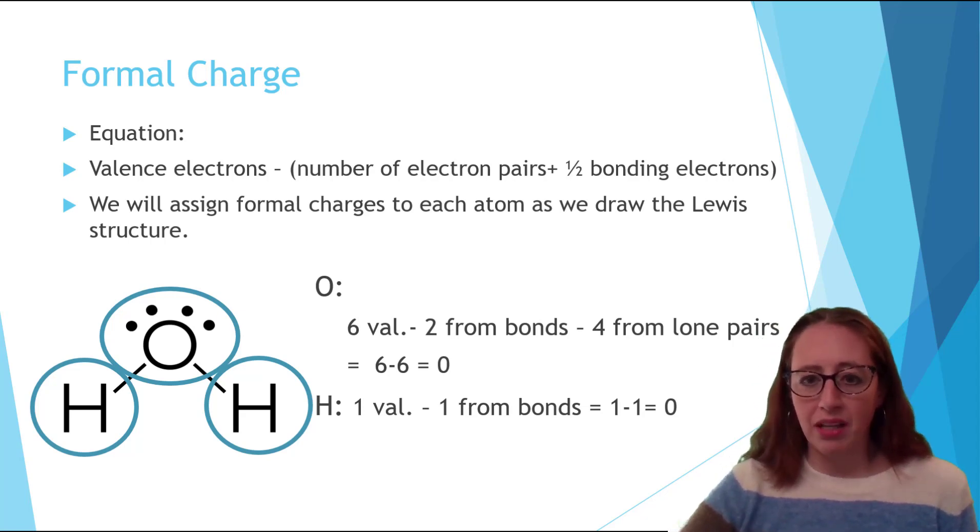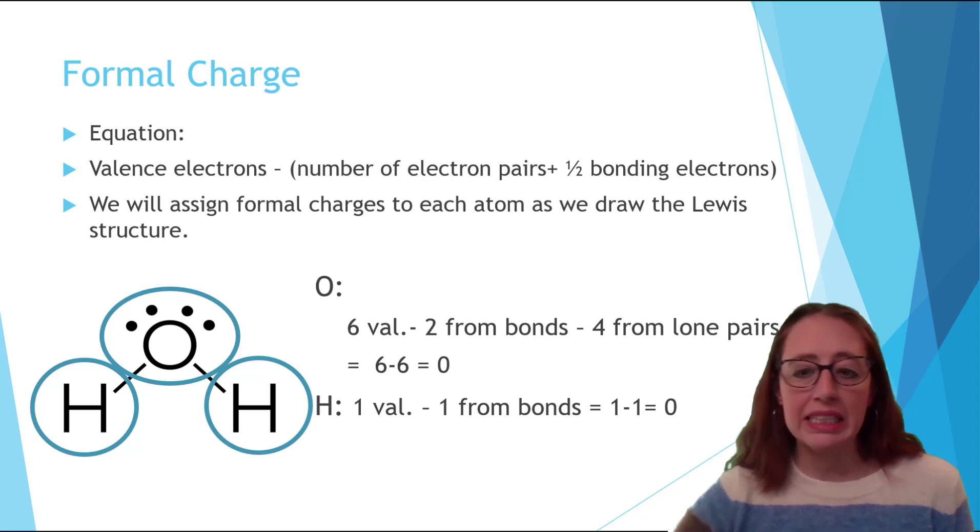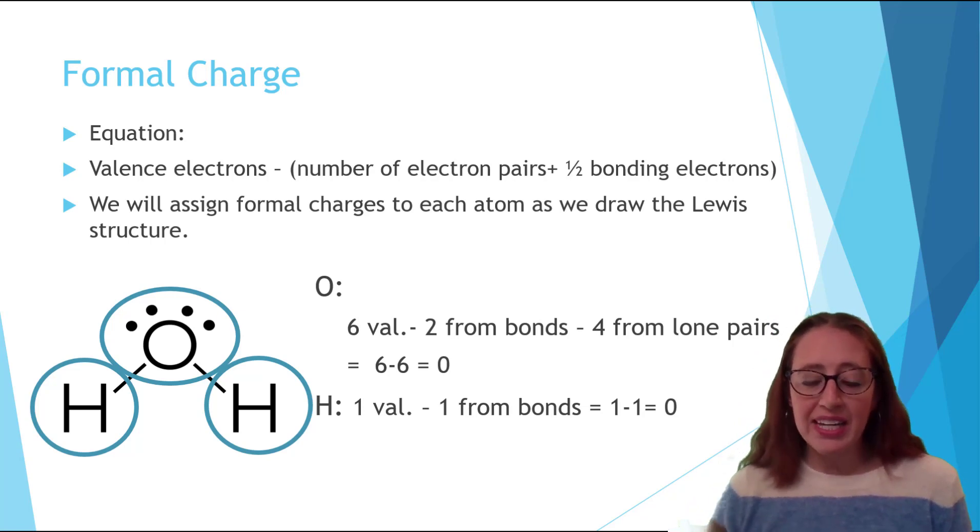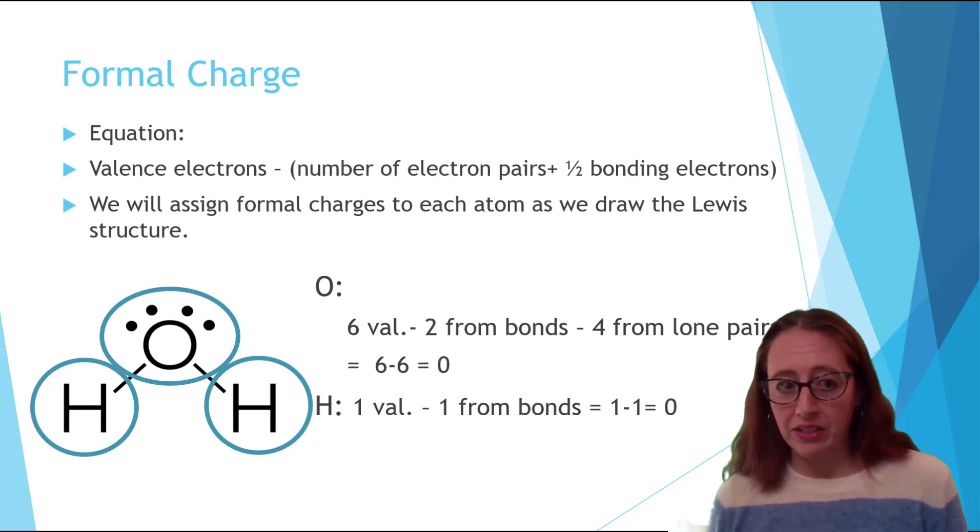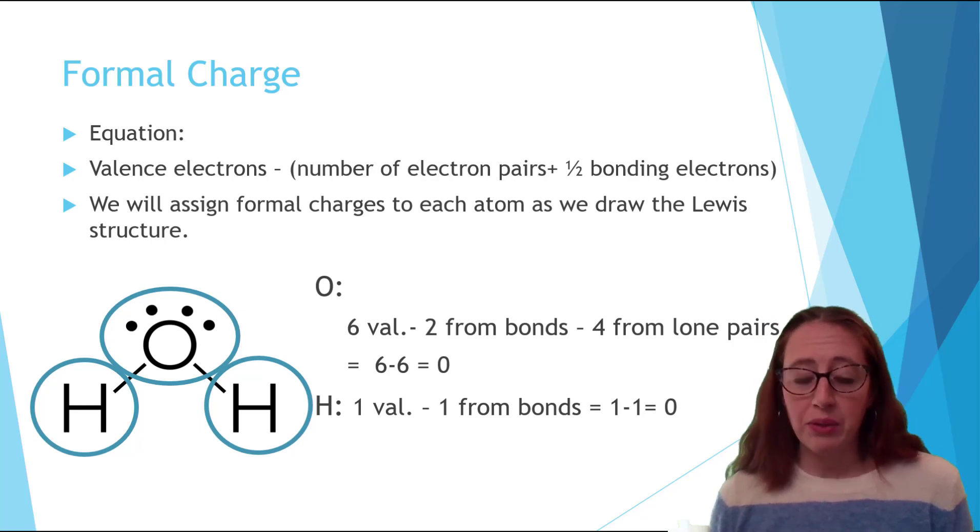What about how many it owns in the molecule though? Its lone pairs are counted completely as its own. So if an atom has three lone pairs that is six electrons that belong to that atom and then it gets one electron from each bond. So if it has three lone pairs and one bond that would equal to seven. This will make some more sense as we do some examples.